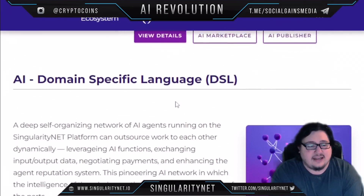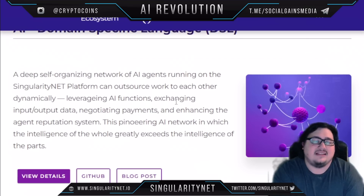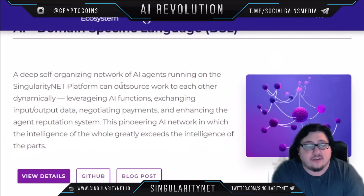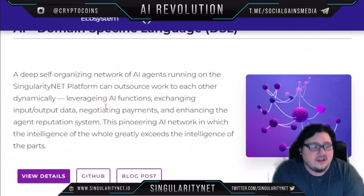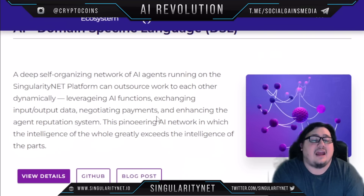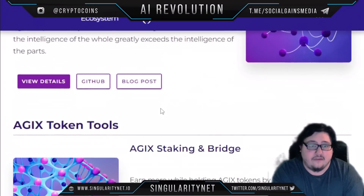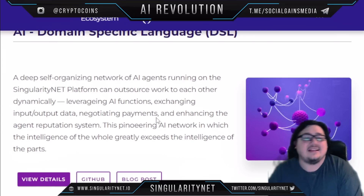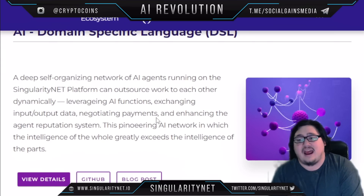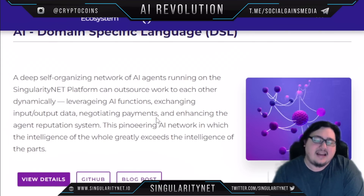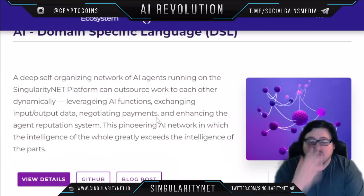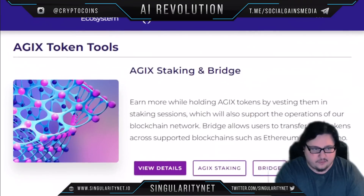They also offer an AI domain-specific language, or DSL. A deep self-organizing network of AI agents running on the SingularityNET platform can outsource work to each other dynamically, leveraging AI functions, exchanging input/output data, negotiating payments, and enhancing the agent reputation system. This pioneering AI network means the intelligence of the whole greatly exceeds the intelligence of the parts — essentially a neural network of different AIs all working together, each with a specific function.